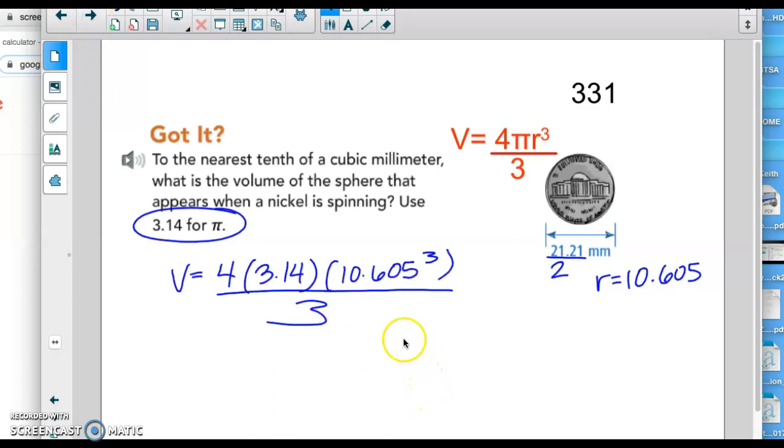So if we typed this whole thing into the calculator, let's go over the terms. Volume is 4, always going to be 4, π or 3.14, 10.605 cubed, all divided by 3. You type that whole thing into your calculator and hopefully you're going to get what I get. You should be getting 4,993.4 millimeters cubed.